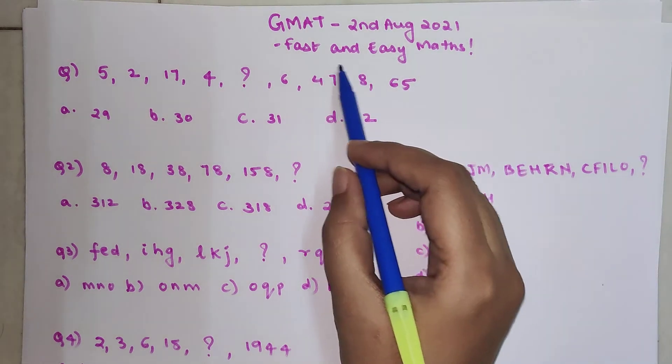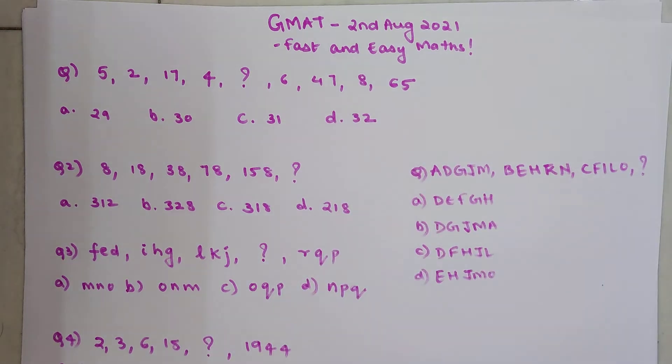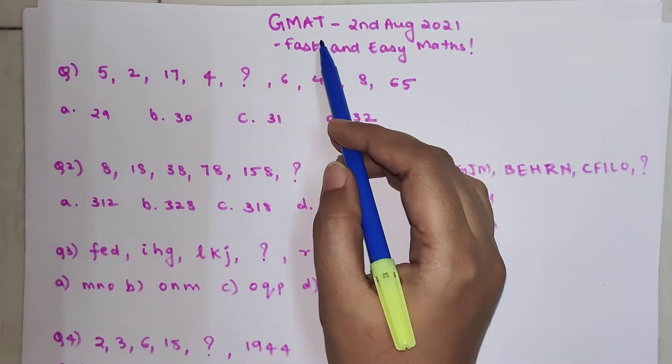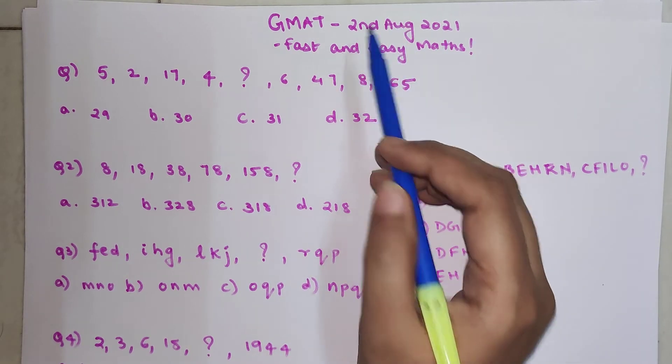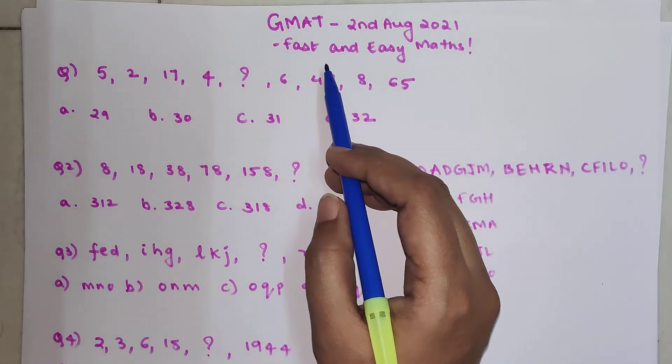Welcome everyone to my channel, Fast and Easy Maths, which is dedicated to giving you tips and tricks related to mathematics. Today we are going to solve GMAT questions which were asked in the paper of 2nd August 2021. This is about 125 GMAT questions.